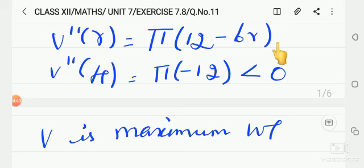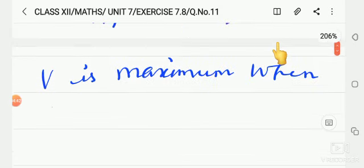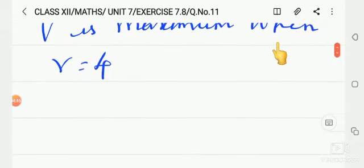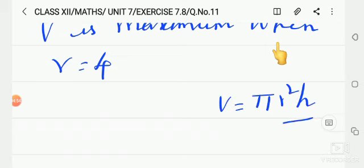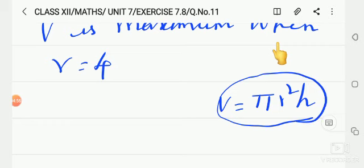Now obtain the greatest value of volume. The volume formula we know is pi r square h. To get that value, the radius value is known.